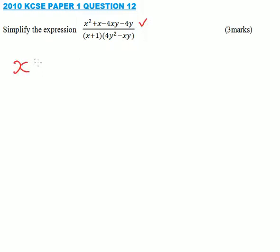So we have x inside the bracket, we'll be left with x plus 1. The second part we factor out minus 4y, so we'll be left with x plus 1, close the bracket.